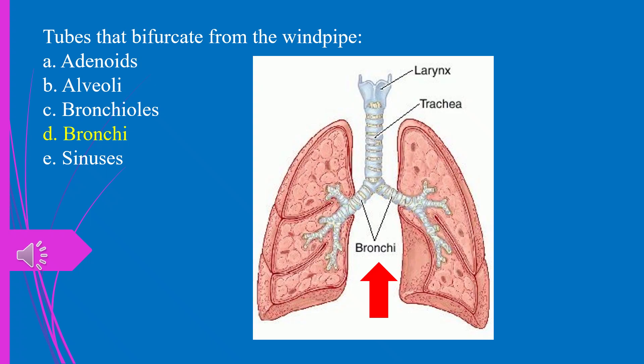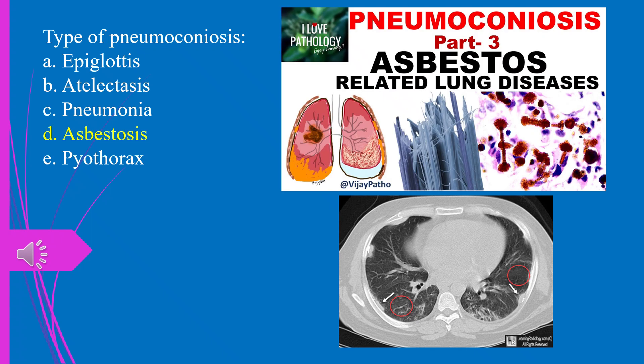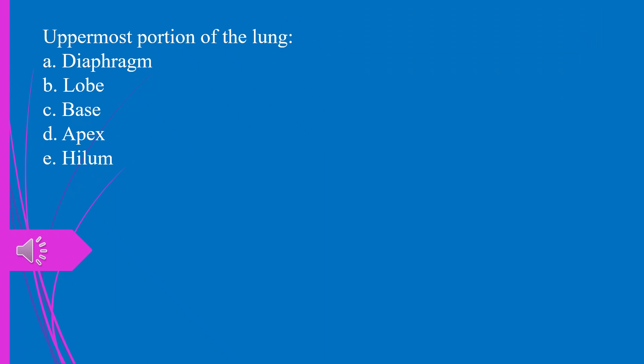Question 44. Type of pneumoconiosis: a) epiglottis, b) atelectasis, c) pneumonia, d) asbestosis, e) hemothorax. The answer is d, asbestosis.